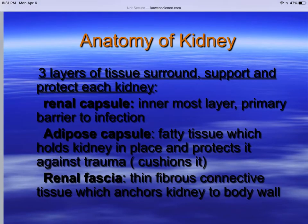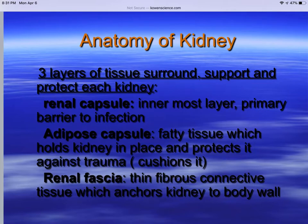There are three layers of tissue that surround, support, and protect the kidneys. The renal capsule is the innermost layer — it's primarily a barrier to infection. The adipose capsule is the fatty tissue that holds the kidney in place. The renal fascia is the thin membranous connective tissue that anchors the kidney to the body wall.